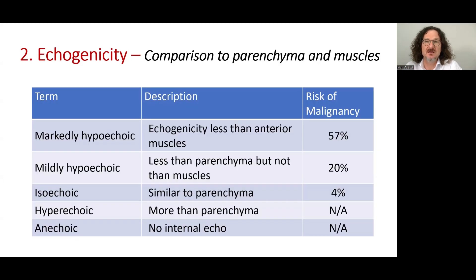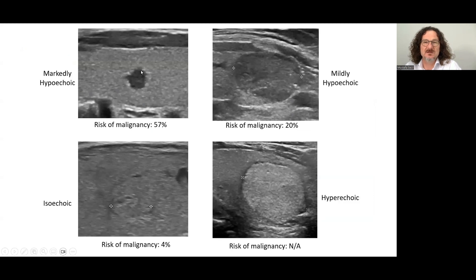The second descriptor is echogenicity. Nodules are compared to the parenchyma and the muscles. They are called markedly hypoechoic if echogenicity is less than the anterior muscles, mildly hypoechoic if less than the parenchyma but not the strap muscles, isoechoic or hyperechoic when compared to the parenchyma, or they may represent no internal echo, which is called anechoic. Examples include a nodule with almost similar echogenicity to the muscles, a hypoechoic nodule compared to parenchyma, an isoechoic nodule, and a hyperechoic nodule.